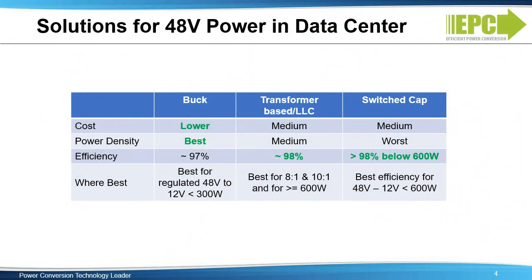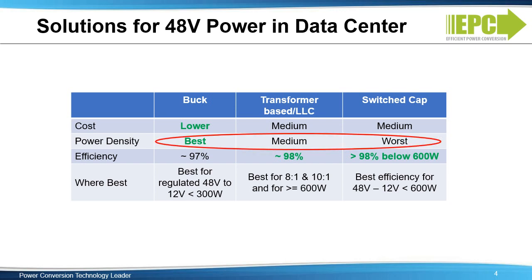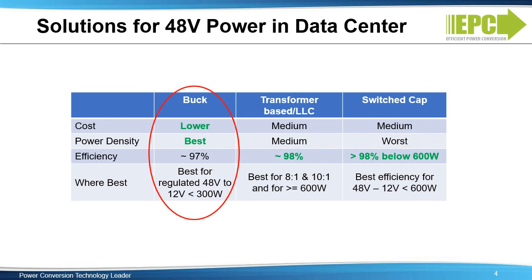The most common topologies for a front-end system of 48 volts to 6 volts or 48 volts to 12 volts are buck, switch capacitor, and LLC. In this table, we analyze the pros and cons of each. The LLC and the buck have the highest power density while switch cap has the worst. The LLC and buck can meet 1700 watts per cubic inch power density versus about 500 watts per cubic inch with the switch capacitor. The buck converter enables the smallest size, lowest component count, and the lowest cost for solutions under 400 watts.